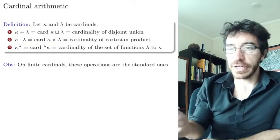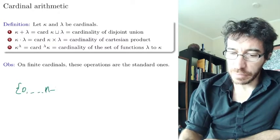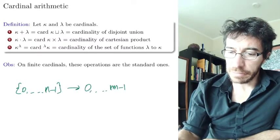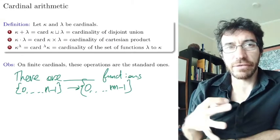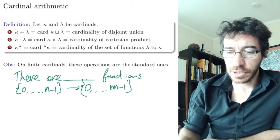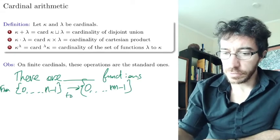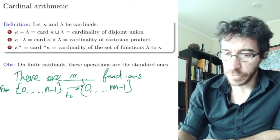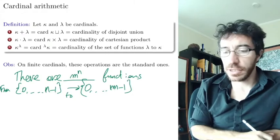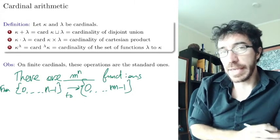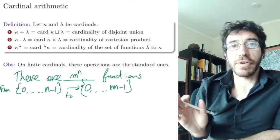If you have the set of functions from {0, ..., n−1} to {0, ..., m−1}, how many functions are there? Well, this is just m to the power of n. So that's how you define exponentiation. The basic properties are going to be fine for the natural numbers, but now we're defining these for sets of any size.